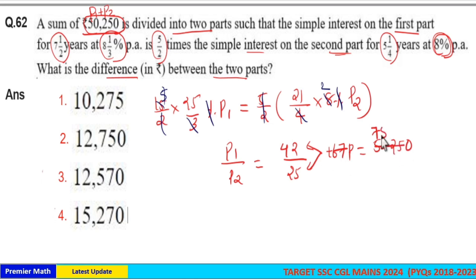67 goes 5 times in 335, remaining is 0. So one part is 750. If one part is 750, we need the difference between the principals. In ratio it is 42 minus 25, which is 17.